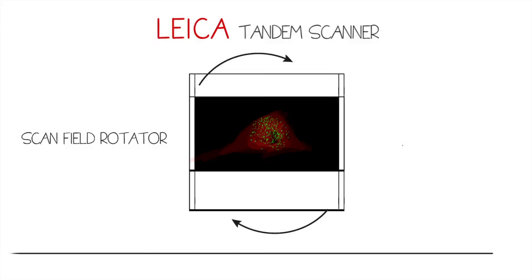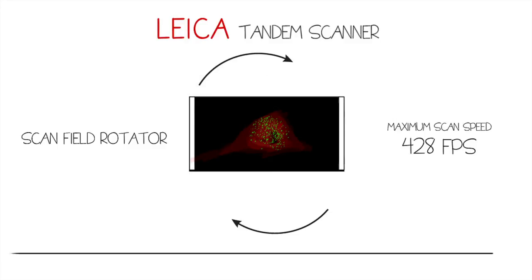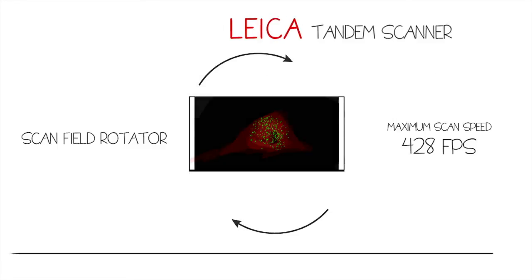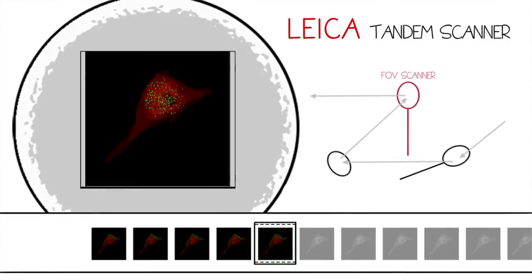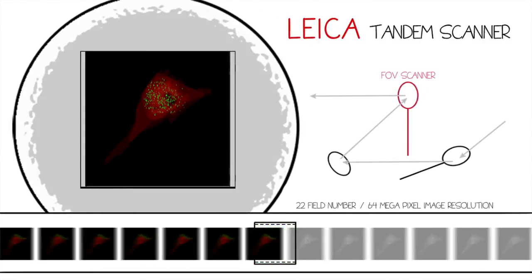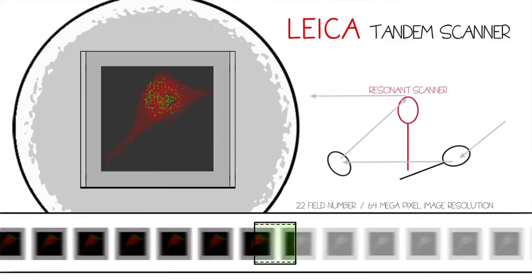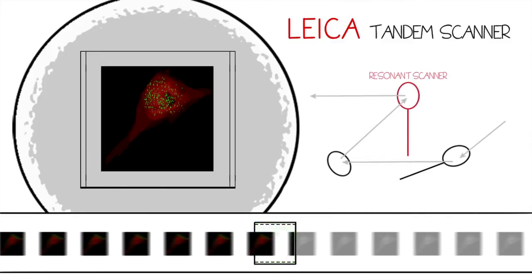A scan field rotator can orient the region of interest to increase speed. This limits line collection in the y-direction, allowing a maximum scan speed of 428 frames per second.